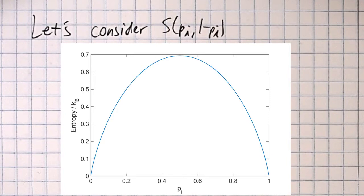You can see from this graph that the entropy is zero when one of the probabilities is zero and the other one is 100%. The graph also shows us that the entropy is maximized when the two probabilities are equal to 50%.